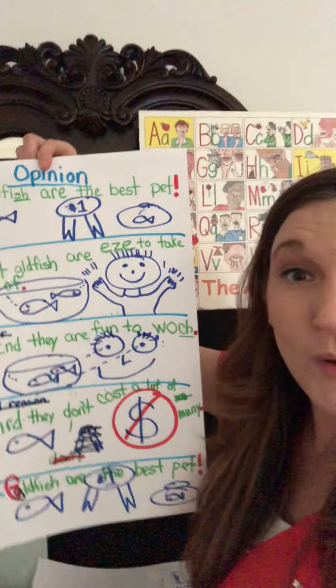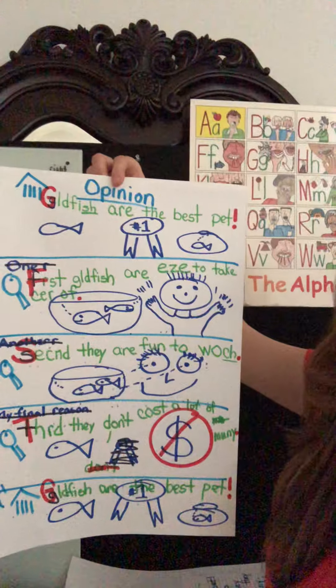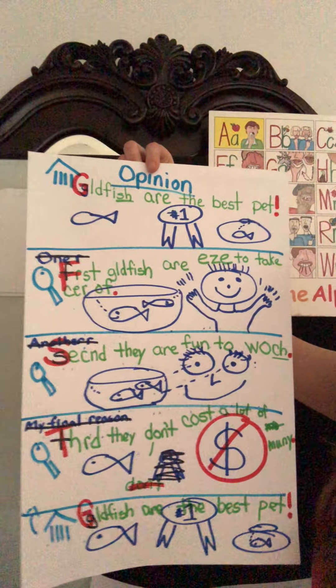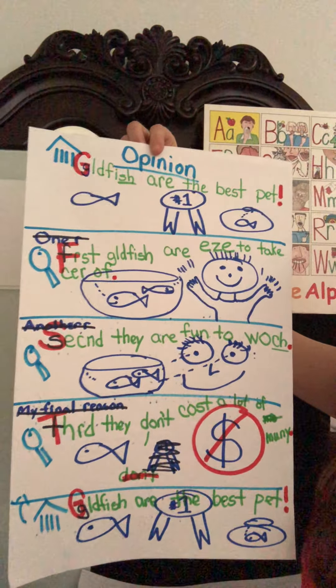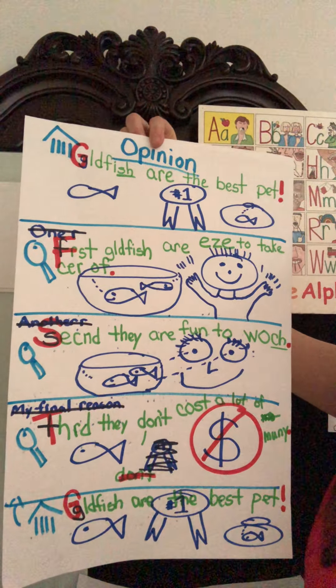Hello, we are on our fifth and final lesson of our opinion piece, why fish are the best pet. Today we're going to illustrate our writing. We went through four other lessons to get to this point. Our first lesson was writing about why fish made the best pet.